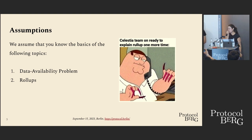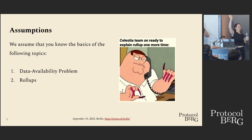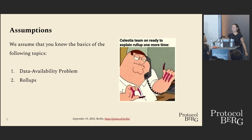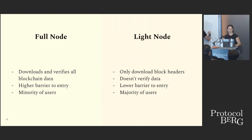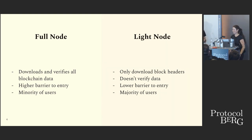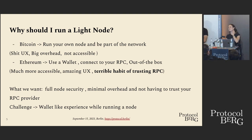We're assuming you know about the data availability problem and rollups, so we can move on. Quick reminder: a full node downloads and verifies all blockchain data — the block header and block data — it's a high barrier to entry and used by a minority. A light node only downloads the block header and verifies it with some trust assumption; it doesn't download or verify the data, and it's the majority of users.